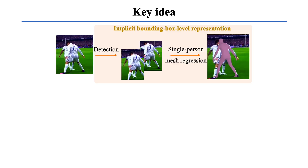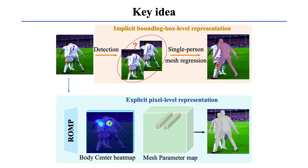The key to achieving this lies in the representation. We observe that multi-stage pipelines use an implicit bounding-box-level representation. When there's strong person-person occlusion in the box, the solution is ambiguous — at the level of the bounding box, it's hard to separate overlapping people. Therefore, we develop a body-center-guided representation for fine-grained pixel-level estimation.